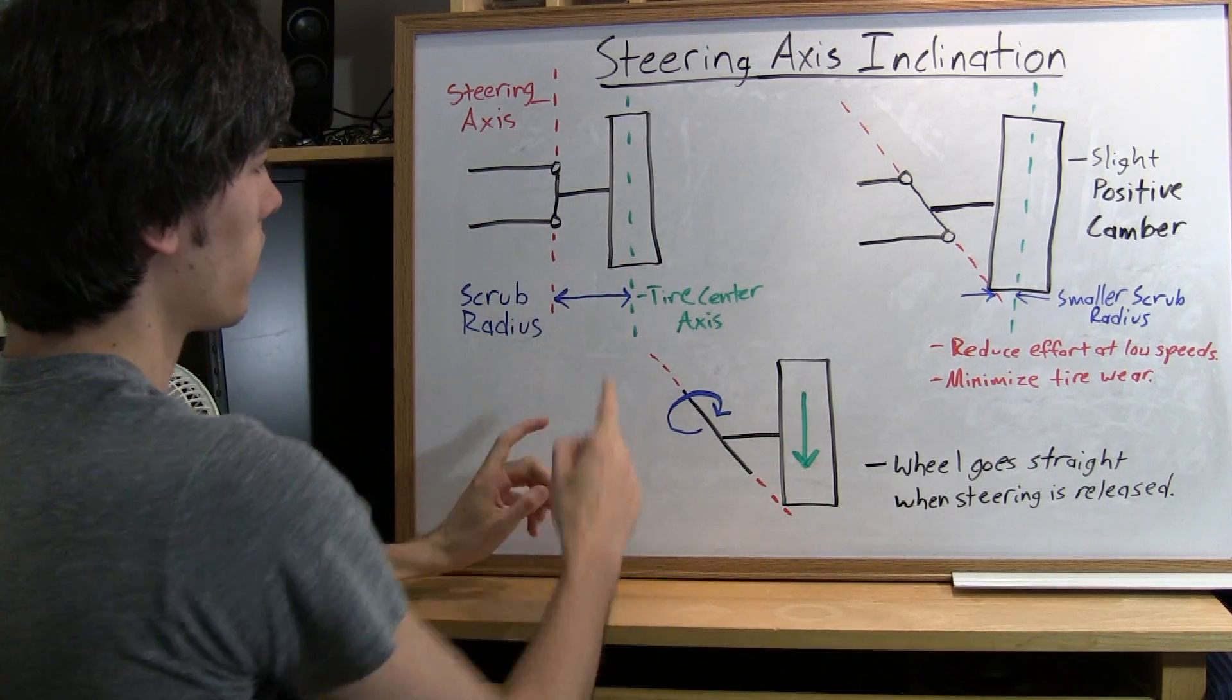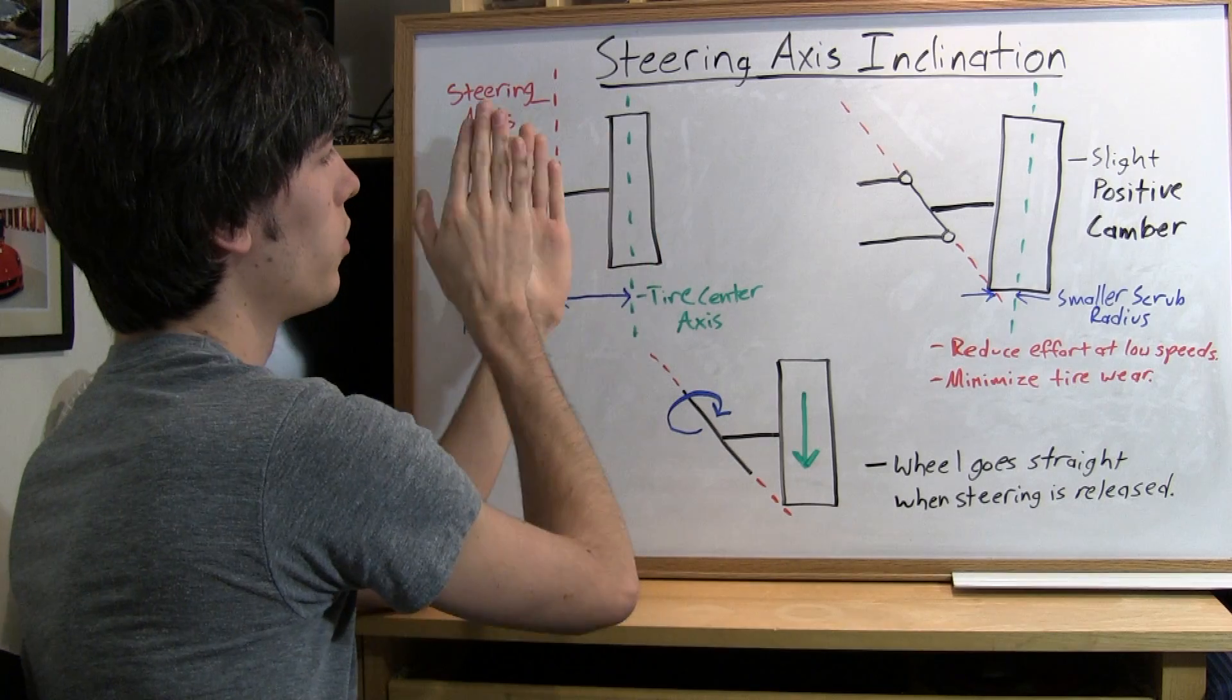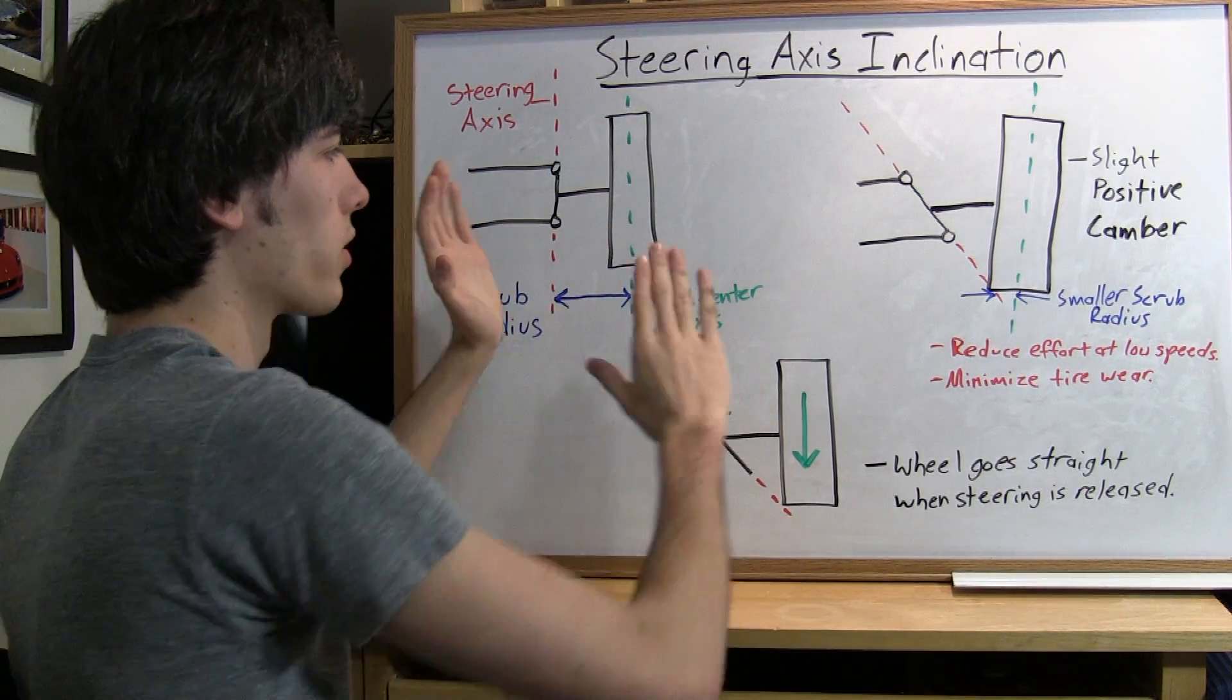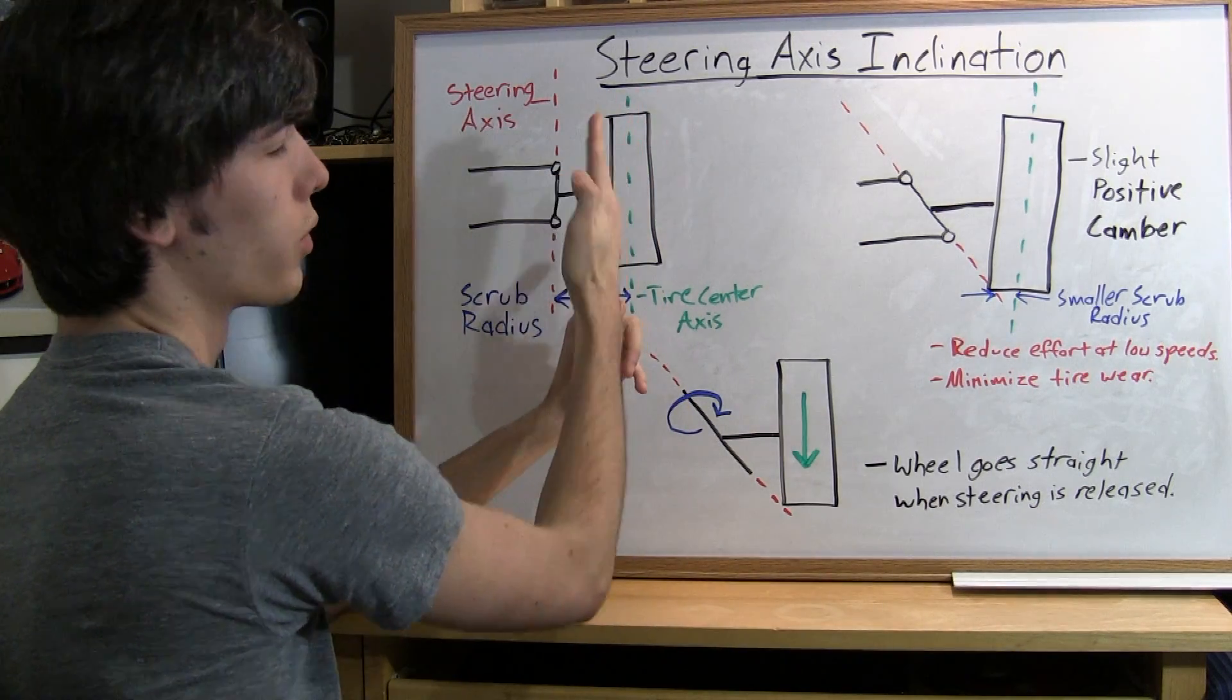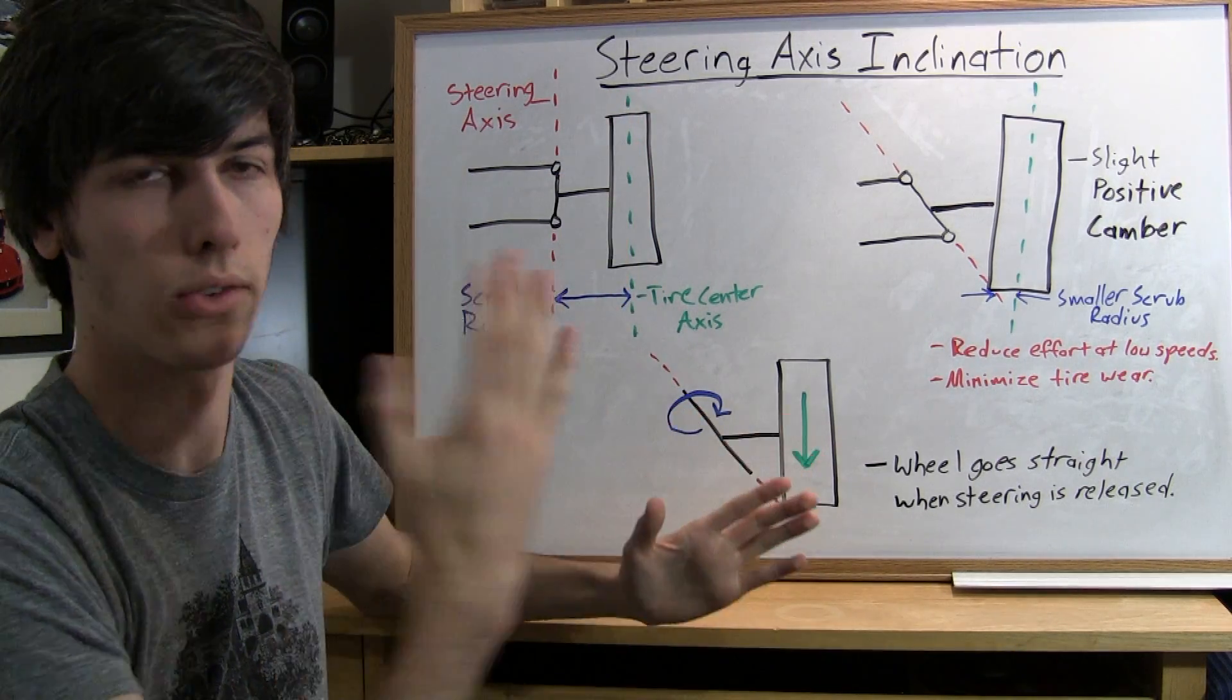That distance is called the scrub radius because as you turn that tire around you're going to have to scrub it along the ground to get it to move. It's not going to be rotating about its center which would be ideal because then you wouldn't have any scrubbing.